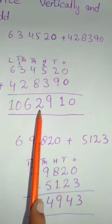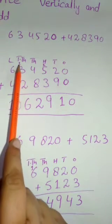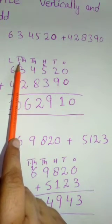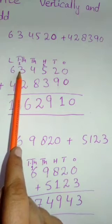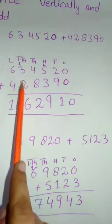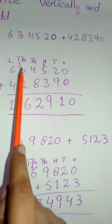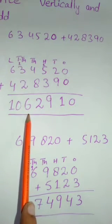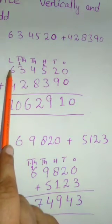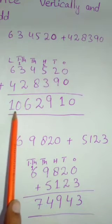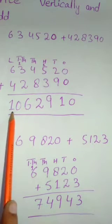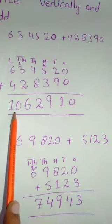Eight and four makes twelve — you will write two here and give one carry to the next number. When we add them including this one carry, it makes six. At last we get six and four, which makes ten.